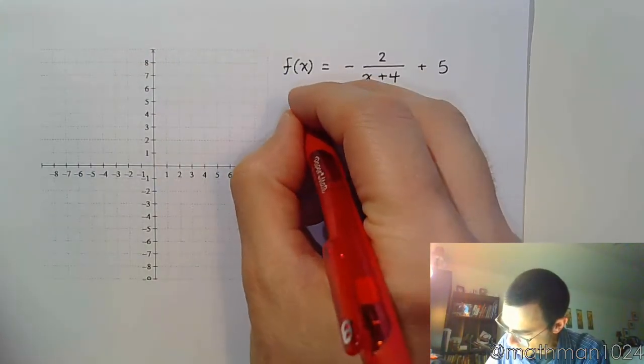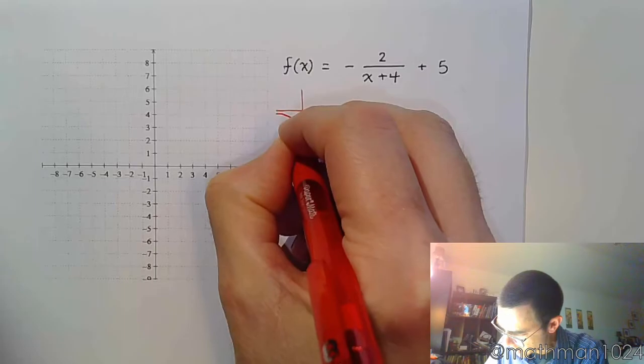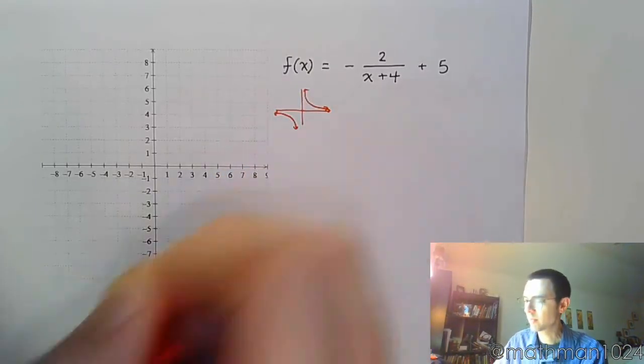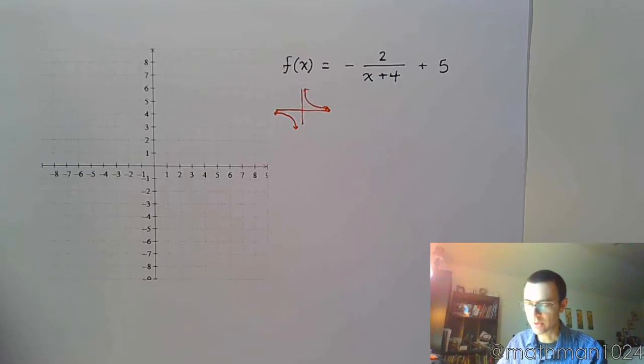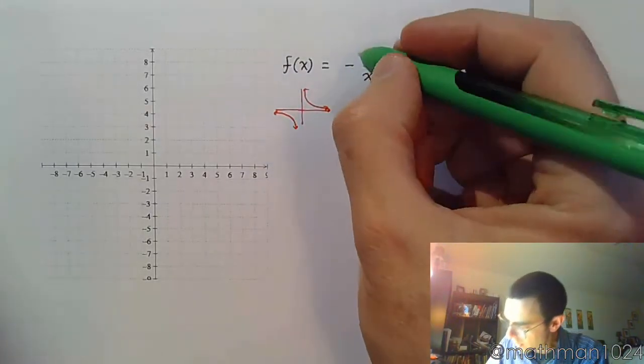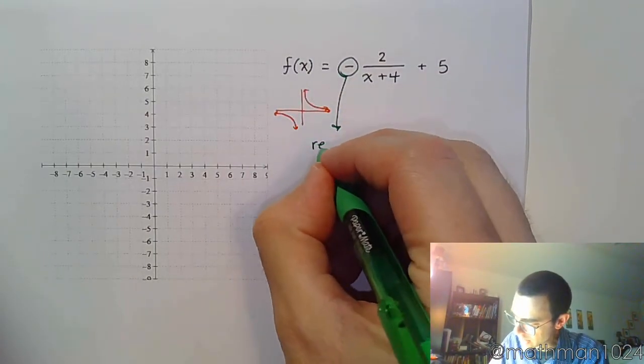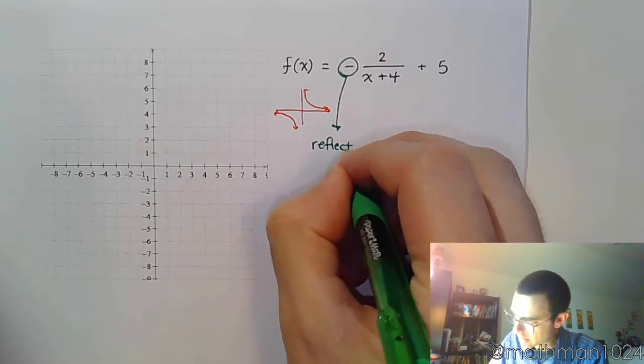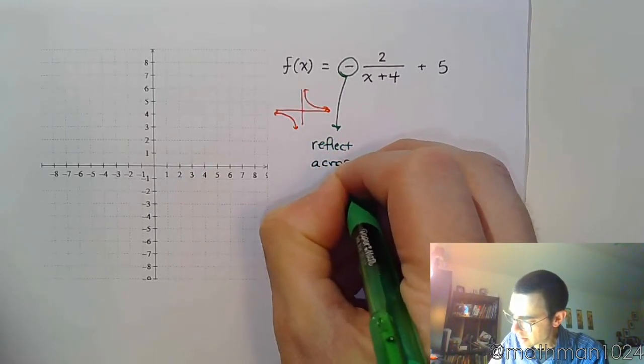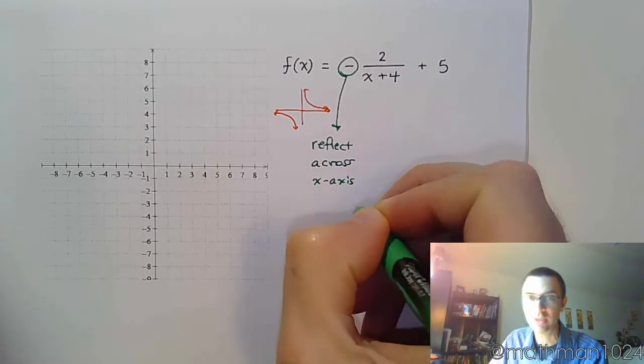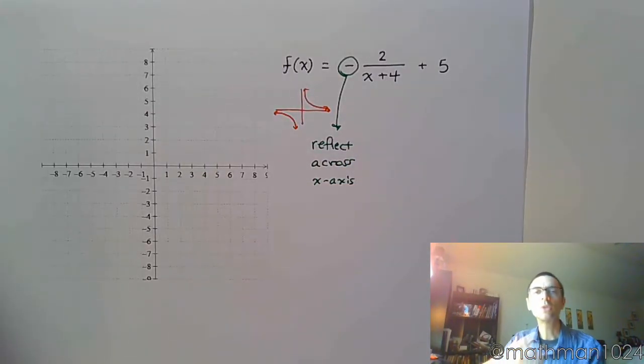So we know right away that this is the basic shape that we have, something that looks like this. Let's see what we've done with this. One of the first things we see is that we have a negative, and that negative means that we are going to reflect across the x-axis. So we're going to be turning that guy upside down.